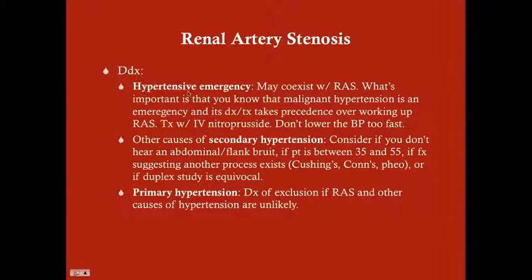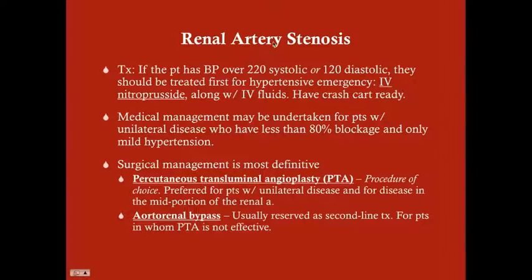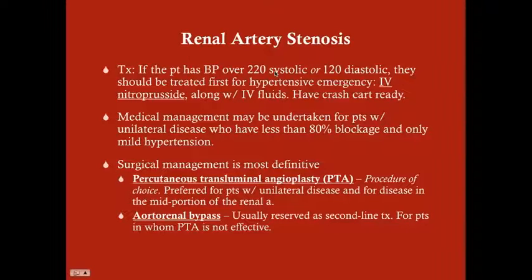The key point: if the patient has very high blood pressure — more than 220 systolic or 120 diastolic — treat them for hypertensive emergency first with IV nitroprusside. Also ensure fluids are given and have a crash cart ready, because blood pressure can get so high that patients are at risk for arrhythmia and other complications. You must treat the hypertensive emergency first — this is covering your ABCs.